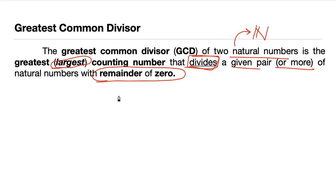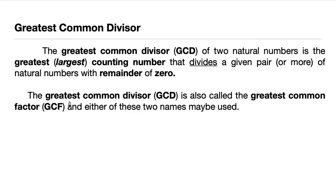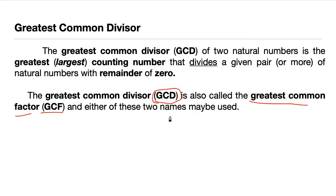It divides them completely with a remainder of zero, meaning all of them must be completely divisible. The greatest common divisor, or GCD, is also known as the greatest common factor (GCF), or in the UK they call it the highest common factor (HCF). Any of these three names can be used.